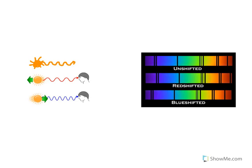One of the things that light can be used to measure is how an object is moving through space. The way that is determined is by using what is called the Doppler shift.